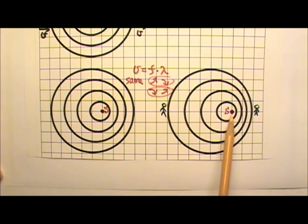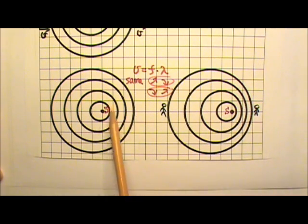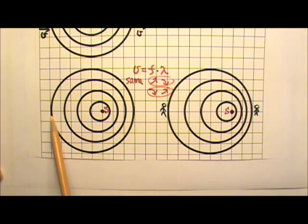See the wave source is moving to the right in both cases, that's why the wavelength over here is shorter than the wavelength on that other side.